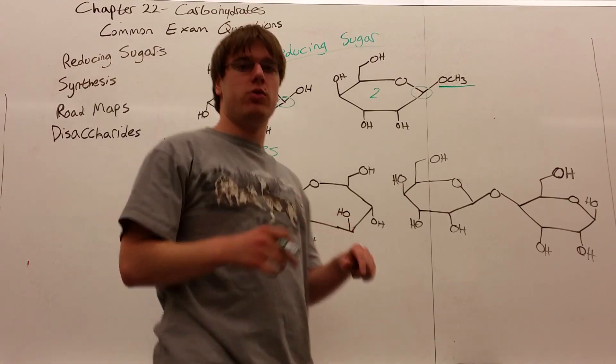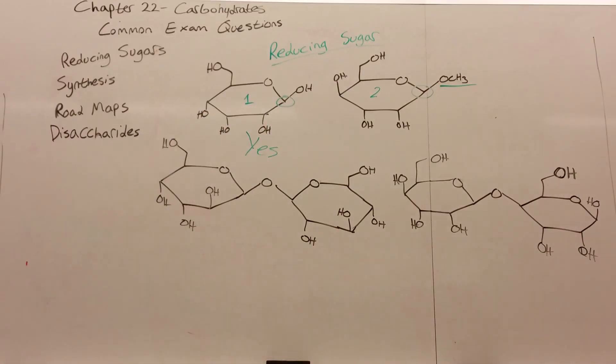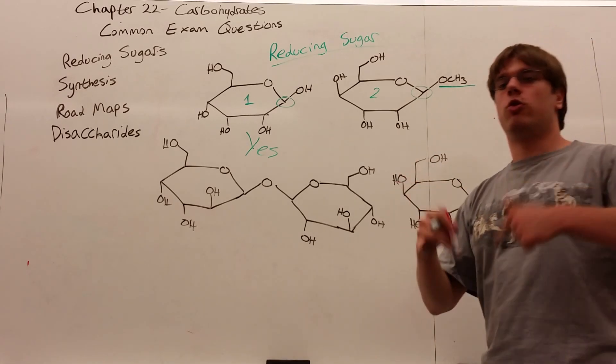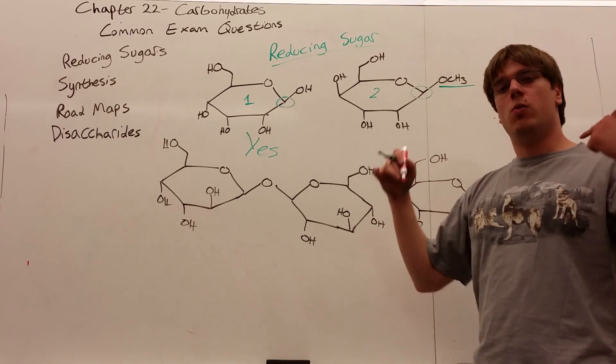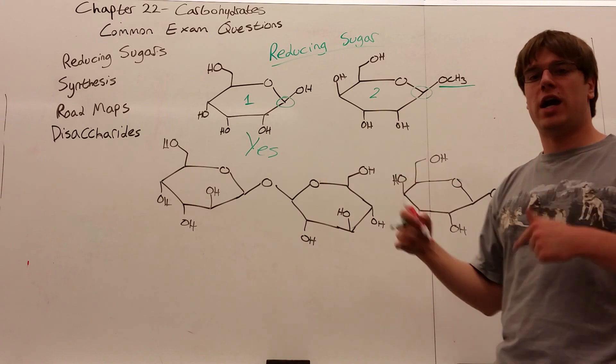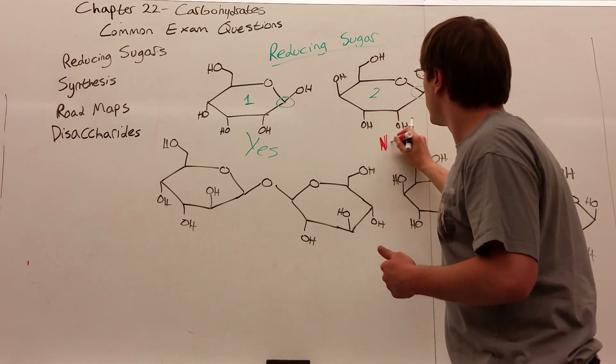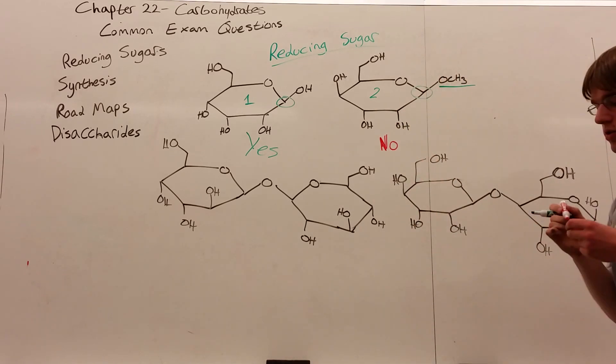And I see over here I have OCH3, and we said before that OCH3 on the anomeric position prevents the ring from opening up and forming its Fischer projection, which you need to form in order to react with NABH4. So this does not have its anomeric OH, and therefore is not a reducing sugar.